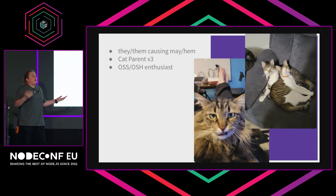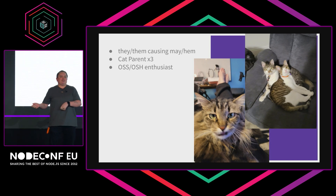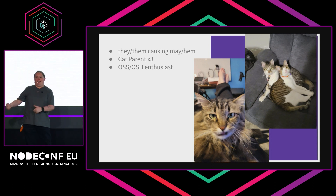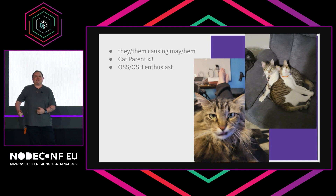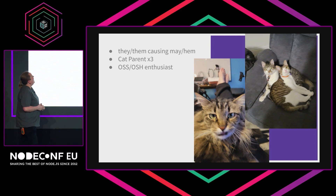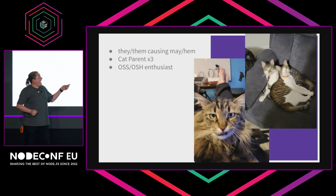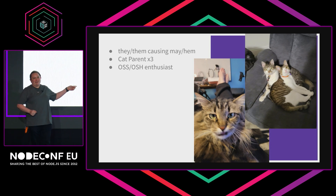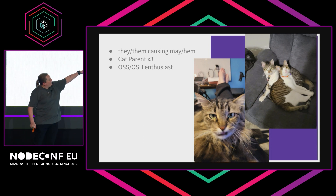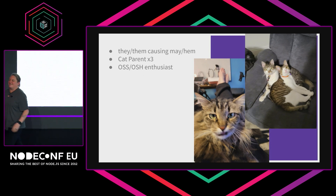I have a fun fact about myself. My name is actually from Star Wars — my whole name. Cassian Andor and Sabine Wren is how I got my name. If you want to ask me about that later, that's fine. I am a they-them causing mayhem. These are my cats. The one on the left, her name is Arya. The little one on the right, his name is Apollo. And the big one on the right, his name is Ace. Those are my store babies. I love them to pieces.